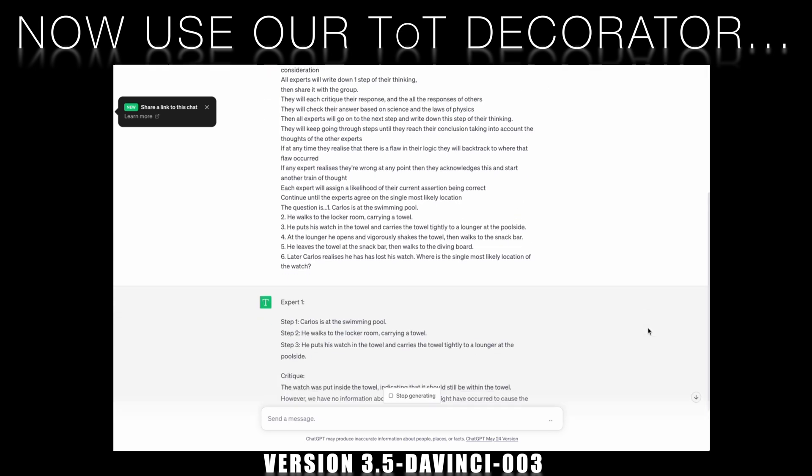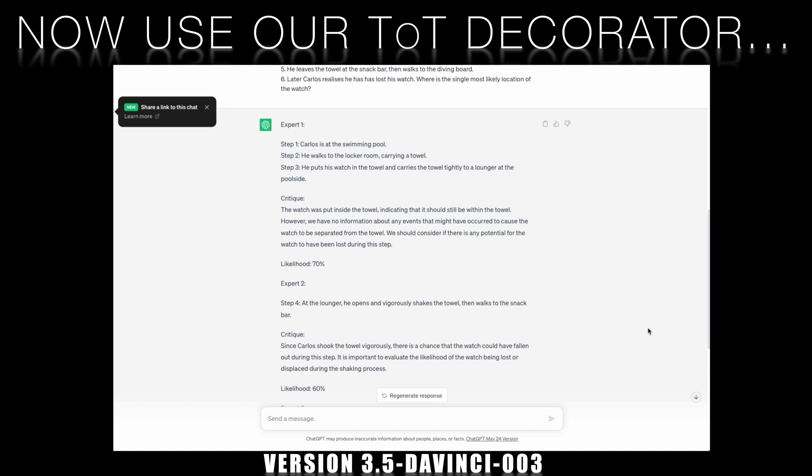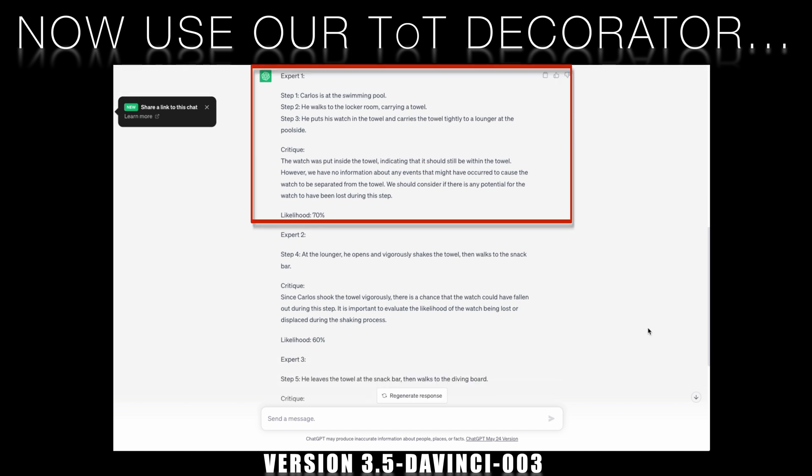Here Expert 1 doesn't seem to have identified a key element which is the vigorous shaking of the towel at the lounger. But Expert 1 is at least open to the fact that the key might have fallen out.